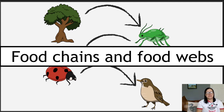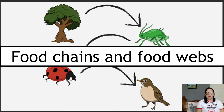Hi there, welcome to Section 2 of Key Area 1 of Unit 3 for National 5. In this section, we're still on Ecosystems Key Area, but we're looking at food chains and food webs. And then we're going to finish off a little bit with Niche at the end.